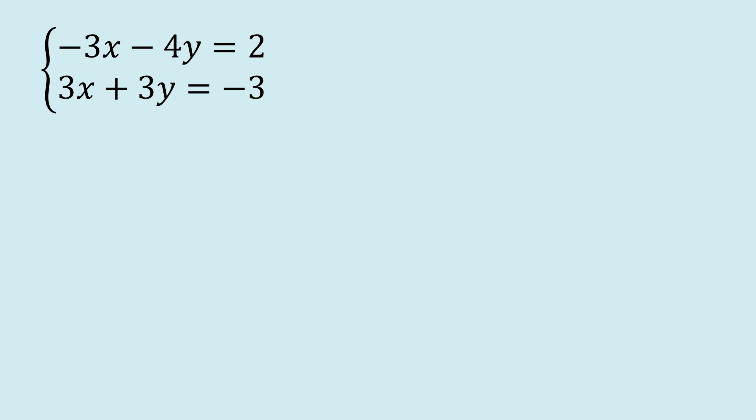So our system is negative 3x minus 4y equals 2, and 3x plus 3y equals negative 3. Our first step in solving the system using substitution is we want to isolate a variable. We want to get a variable by itself. So I'm going to isolate this variable. That's my choice. I'm going to get that variable by itself.